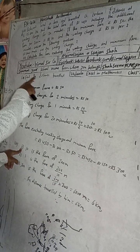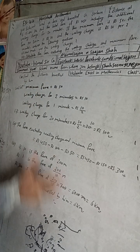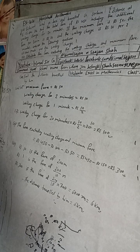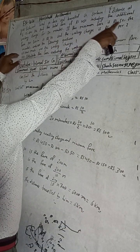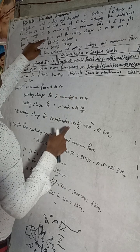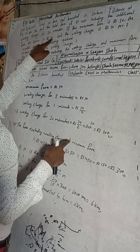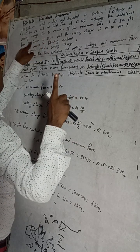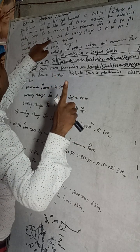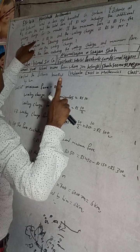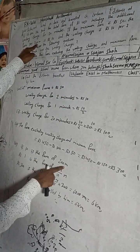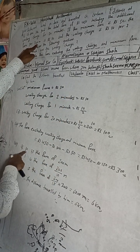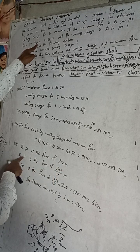Third question: find the distance traveled. Rs 10 per 200 meters means every 200 meters costs Rs 10.